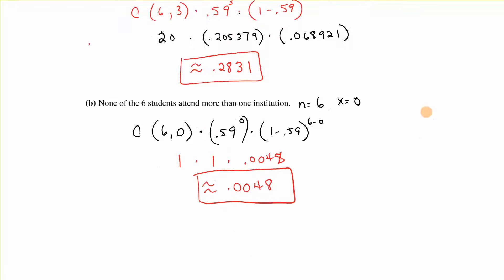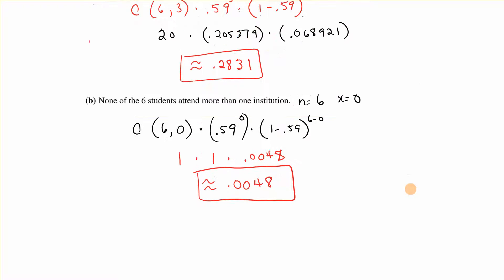The second one says that none of the six attend more than one institution. So we have N is 6, X is zero. C of 6 comma 0 times 0.59 to the zero times 1 minus 0.59 to the sixth minus zero. So anything to the zero is 1, so we have 1 times 1 times 0.0048. So we get the 0.0048 final answer.